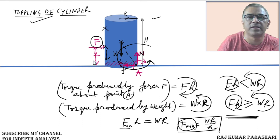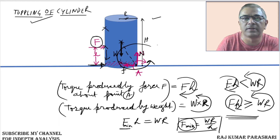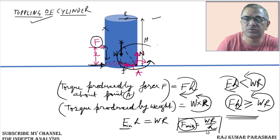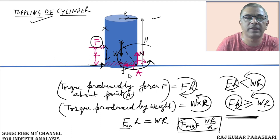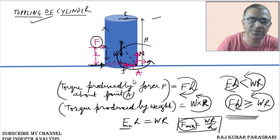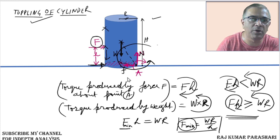Furthermore, if this force is applied at the base, H tends to zero. So this cylinder will not topple at all. That is the logic behind the toppling of any object.